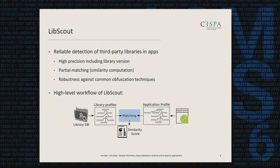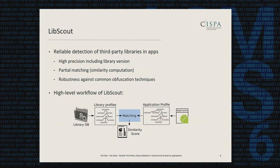On a high level, our approach LibScout works as follows. First, we require a library database — that's the main difference from all other approaches — because we think there's no way of achieving the aforementioned properties without having seen the original libraries at least once. We then provide a library fingerprinting approach to extract obfuscation-resilient profiles from libraries, apply the same technique to applications, and finally use a matching algorithm that tells us which library version is included and to what extent.